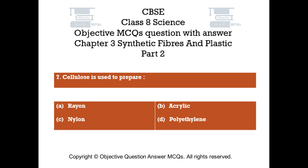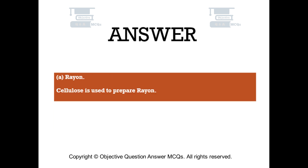Question number 7. Cellulose is used to prepare: Option A - rayon, Option B - acrylic, Option C - nylon, Option D - polyethylene. The right answer is Option A, rayon. Cellulose is used to prepare rayon.